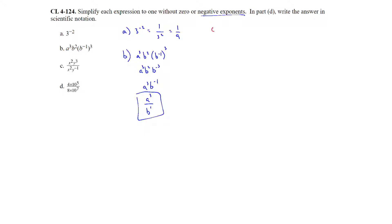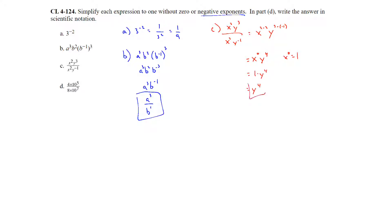For part c, we have x squared times y to the third divided by x squared times y to the negative one. The rule is to subtract exponents: 2 minus 2 for x gives x to the zero power, and for y it's 3 minus negative 1, which equals y to the fourth. Since anything raised to the zero power is 1, we get 1 times y to the fourth, or just y to the fourth.